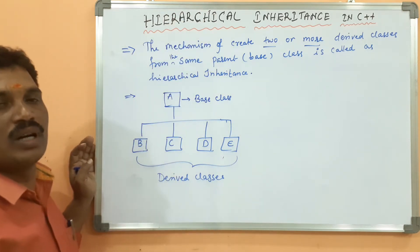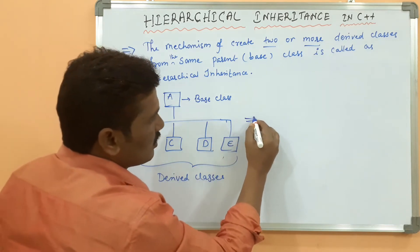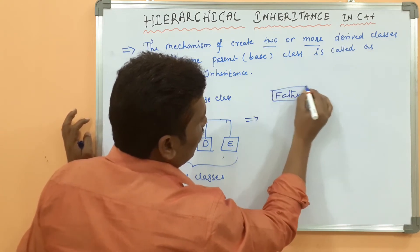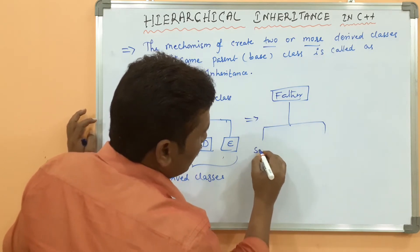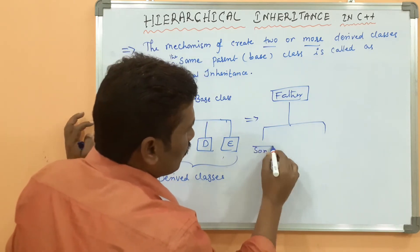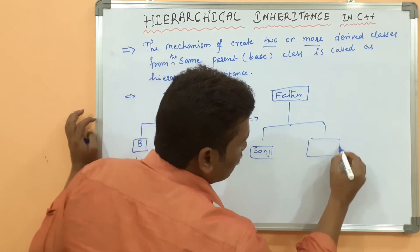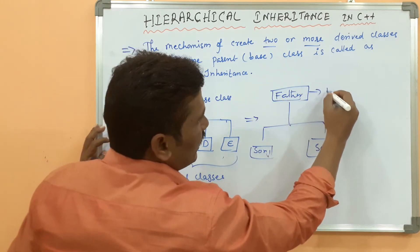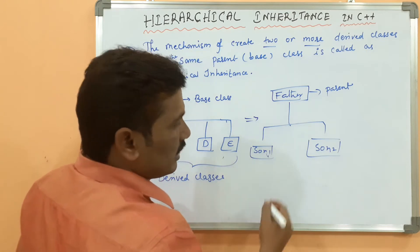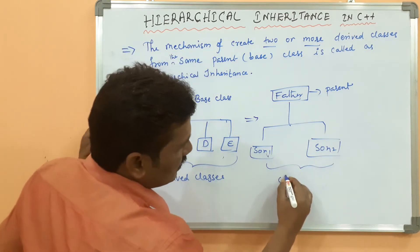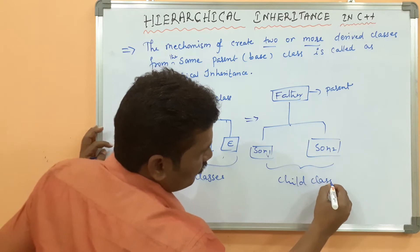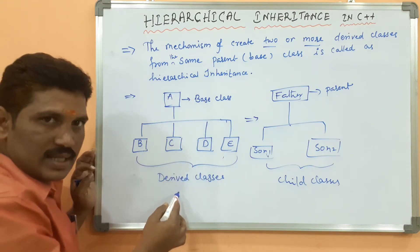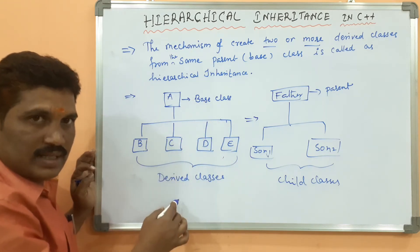A real-world example of hierarchical inheritance: suppose we have a father with son one and son two. The father is the parent class, and both sons are derived classes. The base class is also called the superclass or parent class, and the derived classes are also called subclasses or child classes.